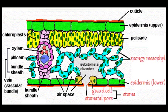Below the spongy mesophyll there is a lower epidermis. This layer contains guard cells. When they open they create apertures called stomata. This is where CO2 gets to the inner area of the leaf, and the stomata close when there is not enough water.